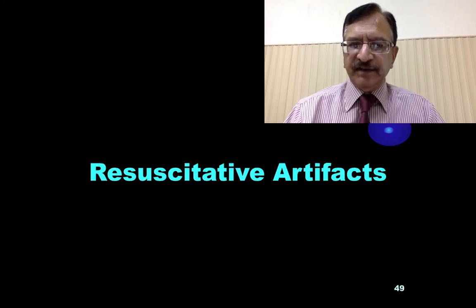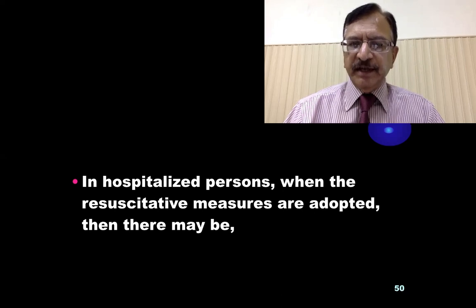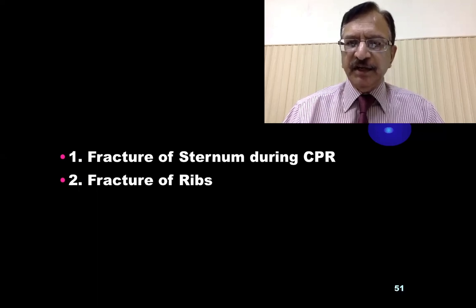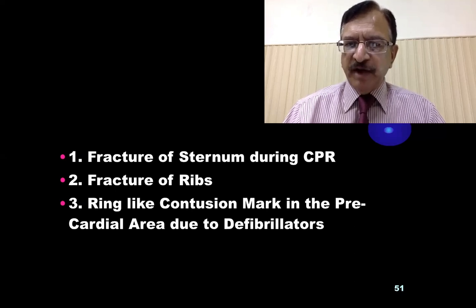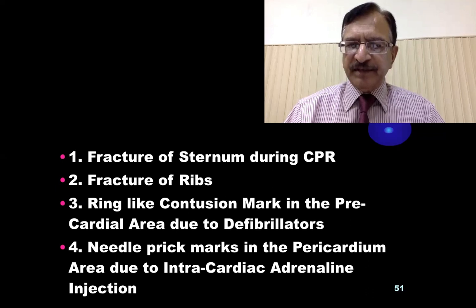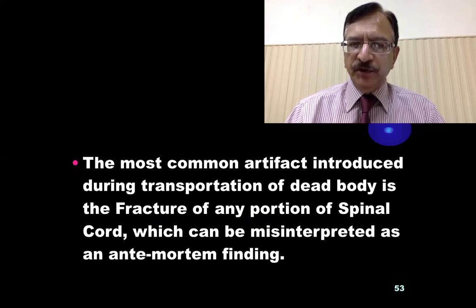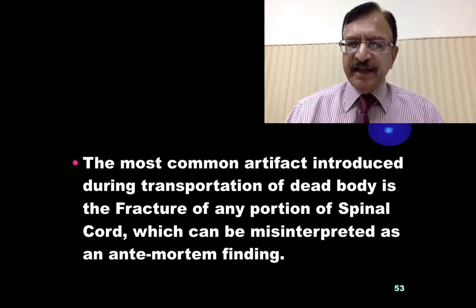Then the resuscitative artifacts. In hospitalized cases, when resuscitative measures are adopted, there may be fracture of the sternum during CPR — cardiopulmonary resuscitation — fracture of the ribs, and ring-like contusion marks in the precordial area because of defibrillation, or needle prick marks in the pericardial area due to intracardiac adrenalin injection. The most common artifact introduced during transportation of the dead body is fracture of the portion of the spinal cord, which can be misinterpreted as an antemortem finding.